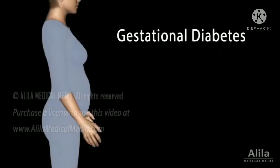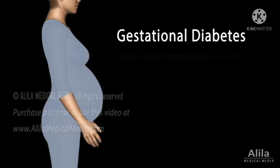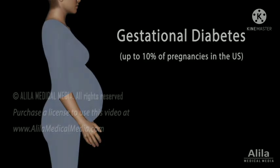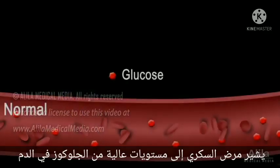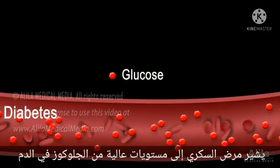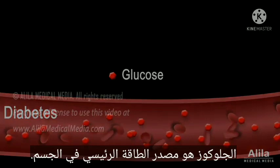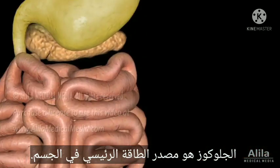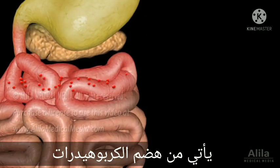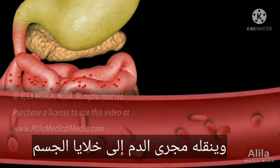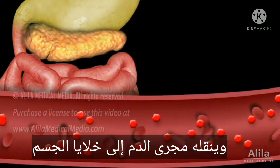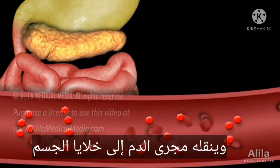Gestational diabetes is a transient form of diabetes mellitus some women may acquire during pregnancy. Diabetes refers to high levels of blood glucose, commonly known as blood sugar. Glucose is the major energy source of the body. It comes from digestion of carbohydrates and is carried by the bloodstream to the body's cells.